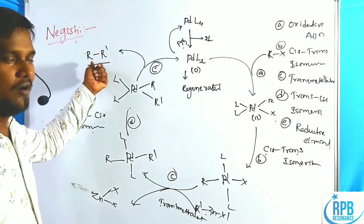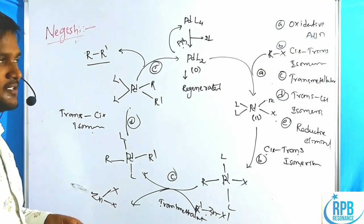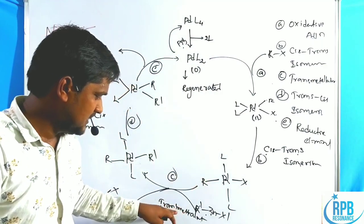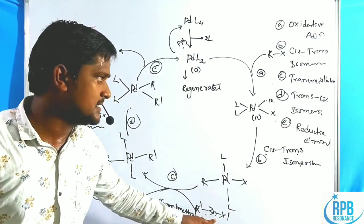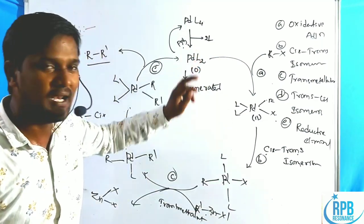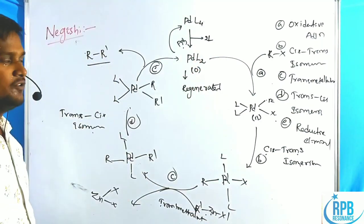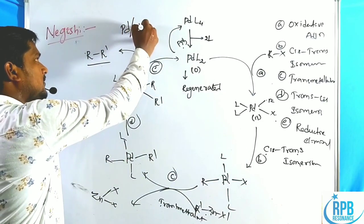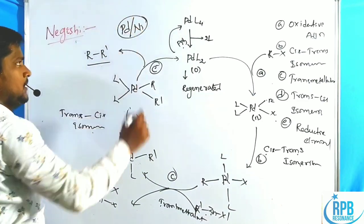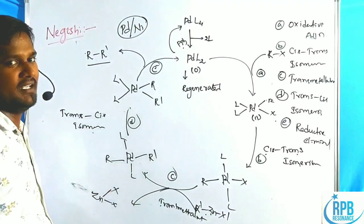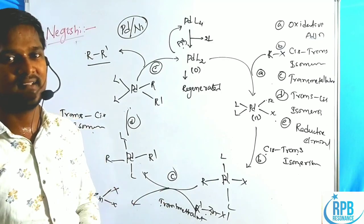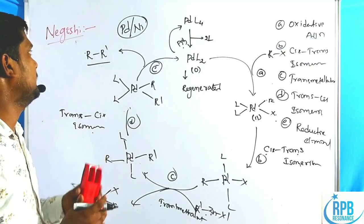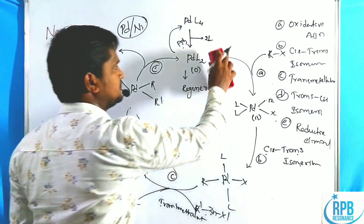Finally, we get R-R', the new C-C single bond, from alkyl halides and organozinc reagents with the help of a palladium or nickel catalyst. This is the modification of the Negishi coupling. Now let us discuss some problems regarding the Negishi cross-coupling reaction.